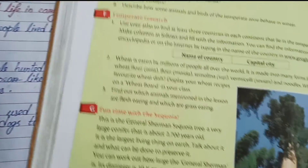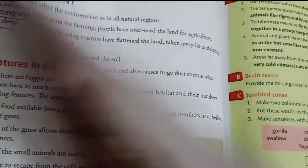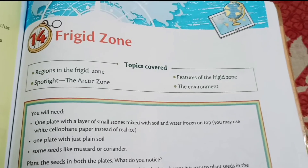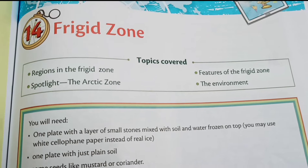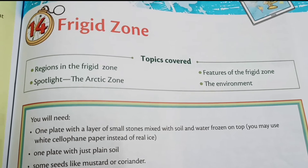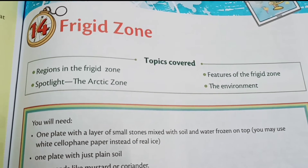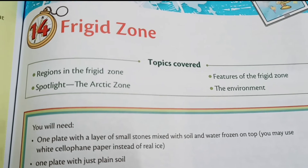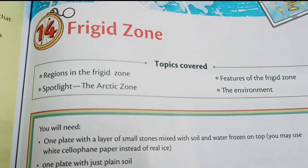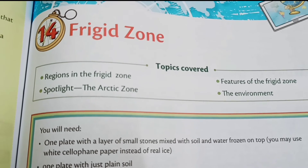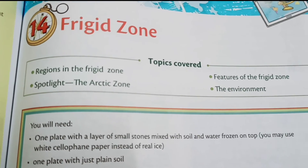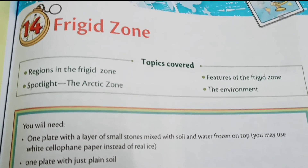So we have solved Chapter 14 — Frigid Zone — from Class 5 Geography book. Don't forget to like the video, subscribe the channel, and press the bell icon to get all notifications on time. If you have missed any video, check out the playlist or description box. If you have any queries, let me know in the comment box. That's all for today — see you soon with a new video, till then take care and bye bye.